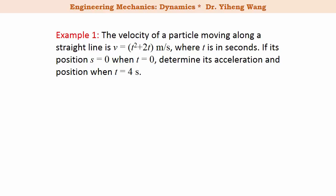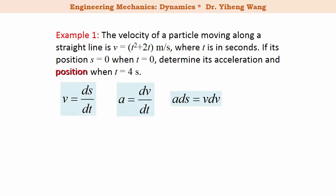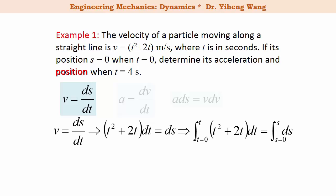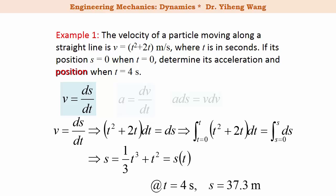For the second part, we need to find the position of the particle at t equals 4 seconds. Since we have velocity as a function of time and need to find position, the variables of interest are v, t, and s, so we use equation one. We substitute v with the time function, rearrange, and integrate both sides. Pay attention to the lower integration limits, which come from the initial condition. After integration and rearrangement, we get position as a function of time, and at t equals 4 seconds the position evaluates to 37.3 meters.